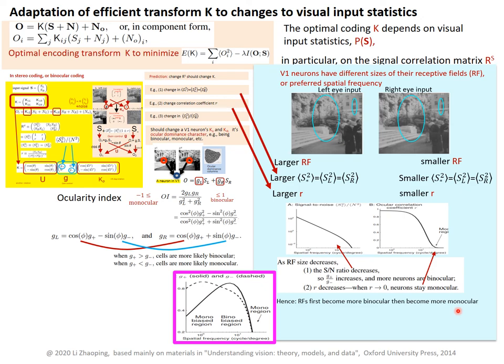This non-monotonic effect — binocularity peaking at intermediate spatial frequencies — may only be observable if animals have sufficient spatial acuity for very small receptive fields. For monkeys and humans, this could potentially be present and is worth examining in the data.